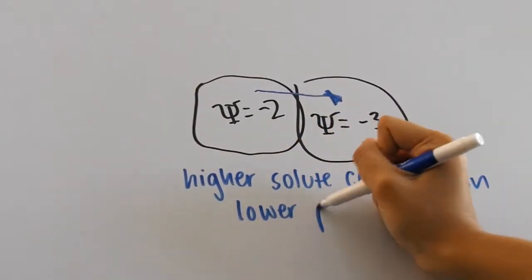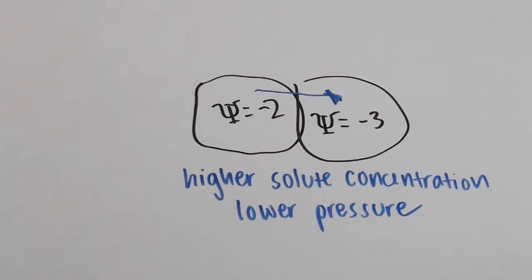We know that water goes from higher to lower water potential, so water will diffuse from the left cell to the right.